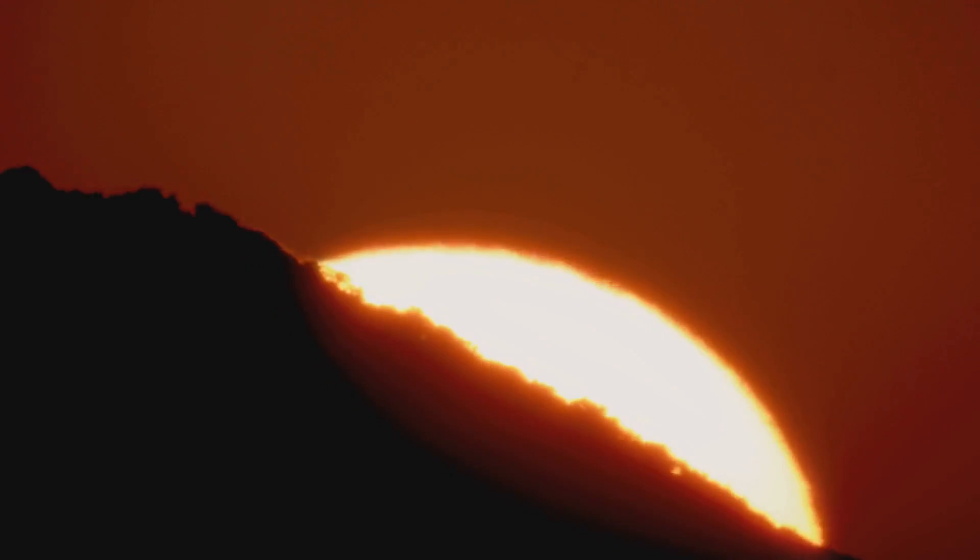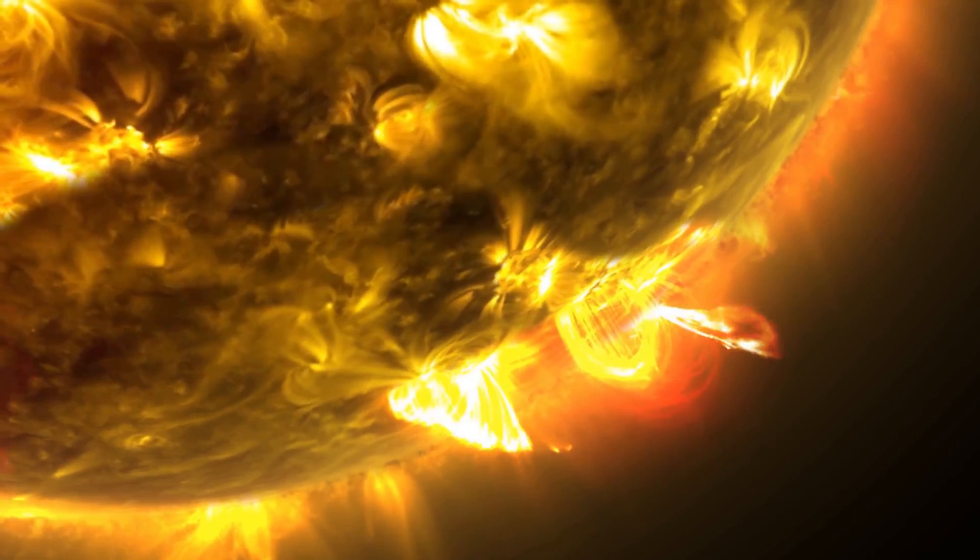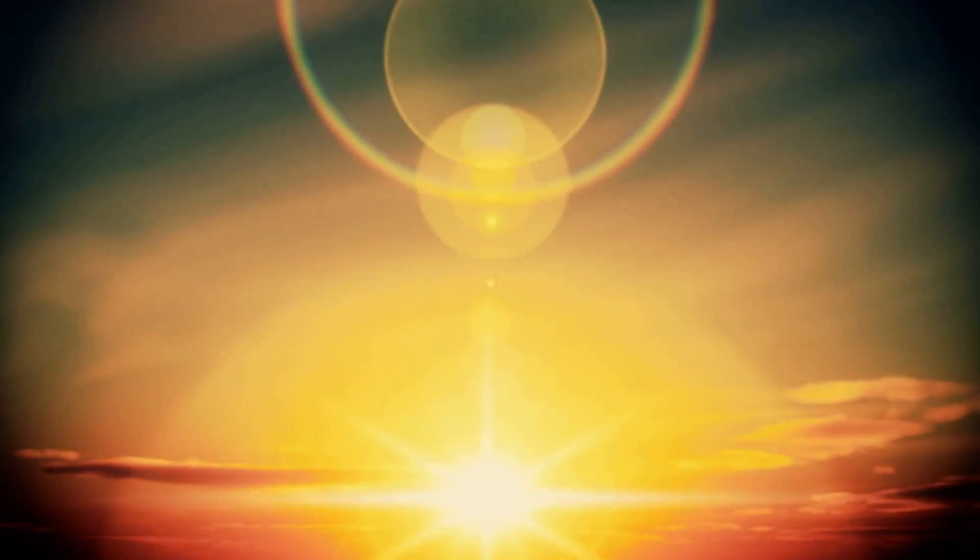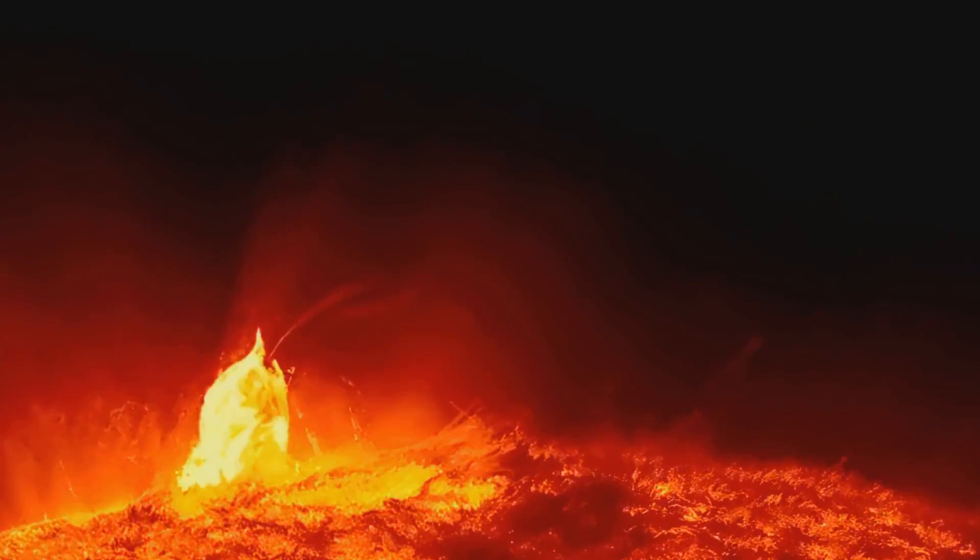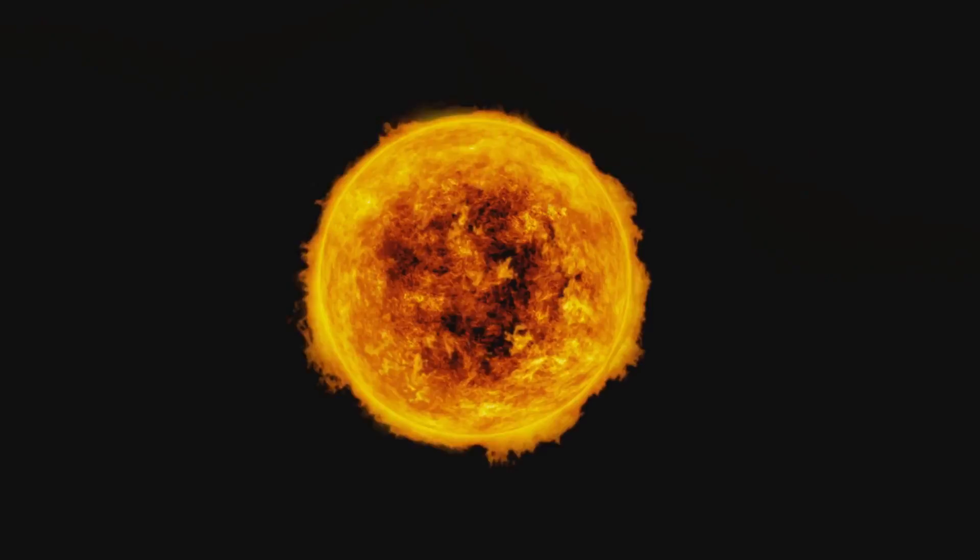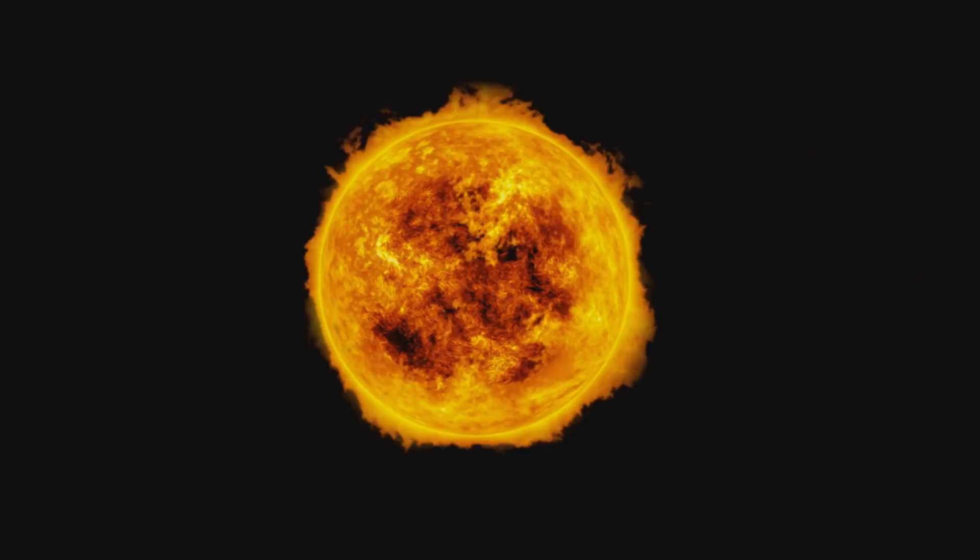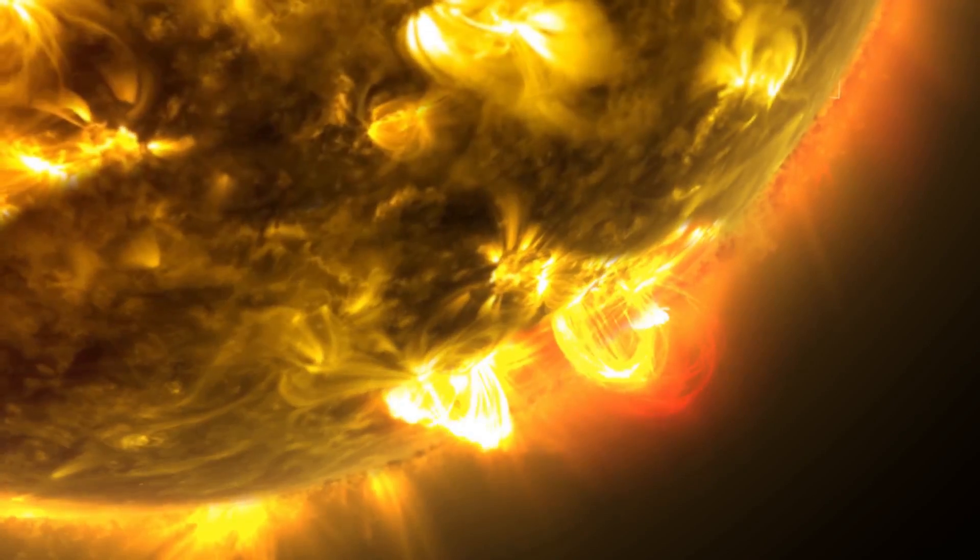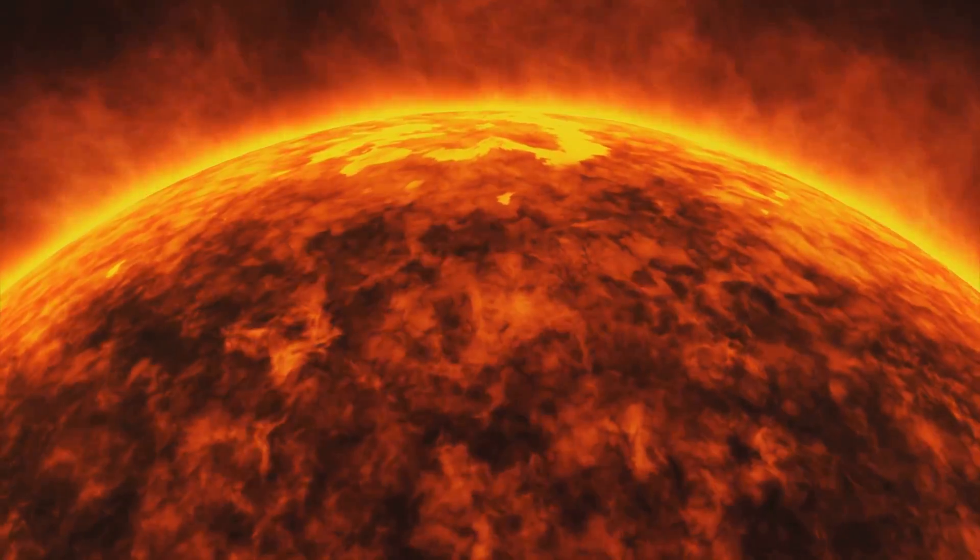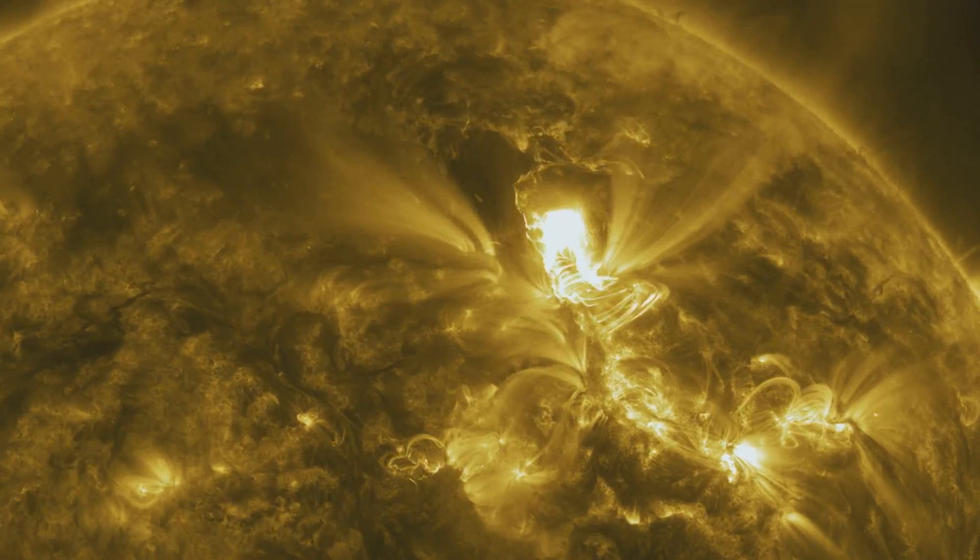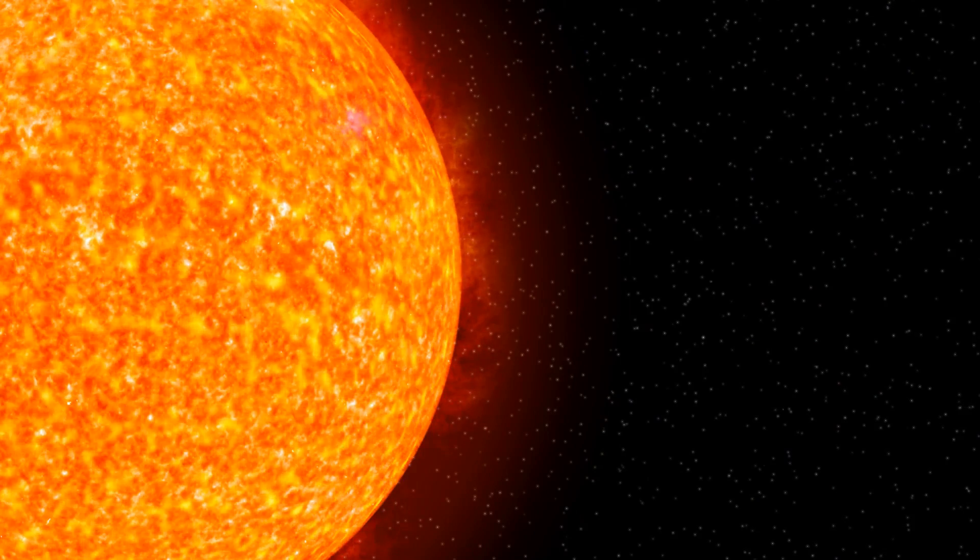Let's see what happens next. The sun is a middle-aged star about 4.6 billion years old, in its stable main sequence phase. It steadily fuses hydrogen into helium in its core, but this process is slowly changing its internal structure. As hydrogen turns to helium, the core becomes denser and hotter. A hotter core speeds up fusion, making the sun burn more fiercely. This extra energy causes the sun to expand slightly and grow brighter.